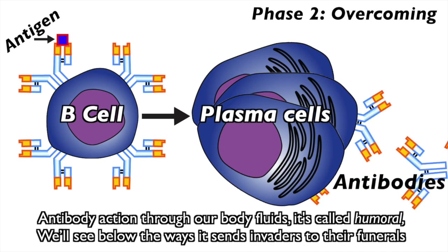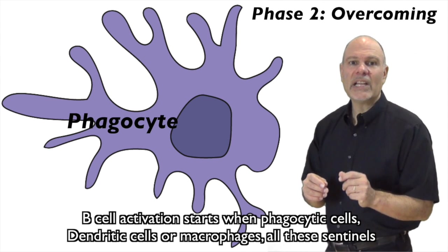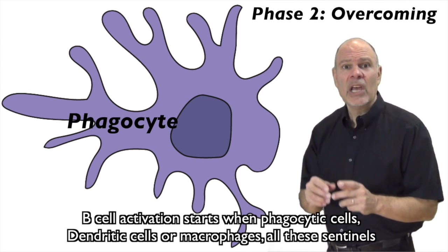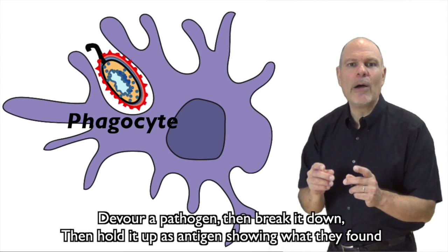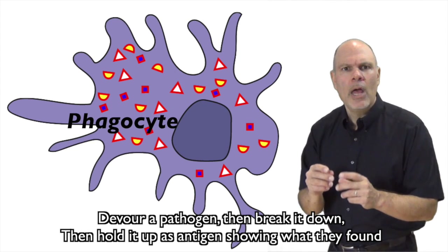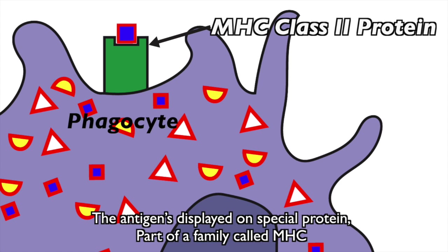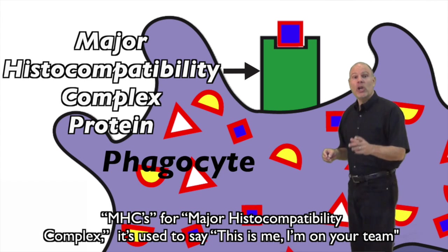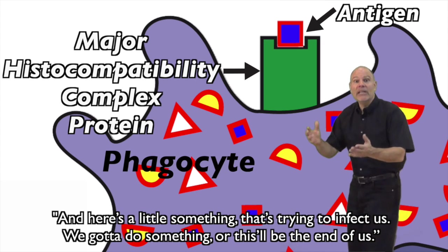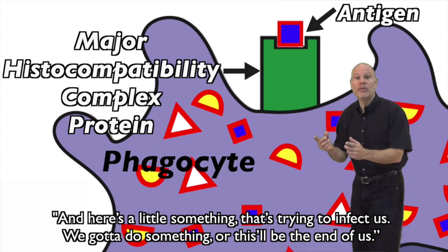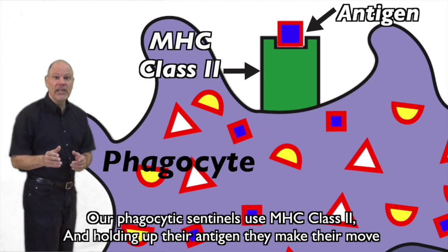B-cell activation starts from phagocytic cells — dendritic cells and macrophages, all these sentinels. They devour a pathogen to break it down, then hold it up as antigen to show what they found. The antigen is displayed on a special protein, part of a family called MHC — major histocompatibility complex. It's used to say, 'This is me, I'm on your team, and here's a little something that's trying to infect us.' Our phagocytic sentinels use MHC class 2, holding up the antigen as they make their move.